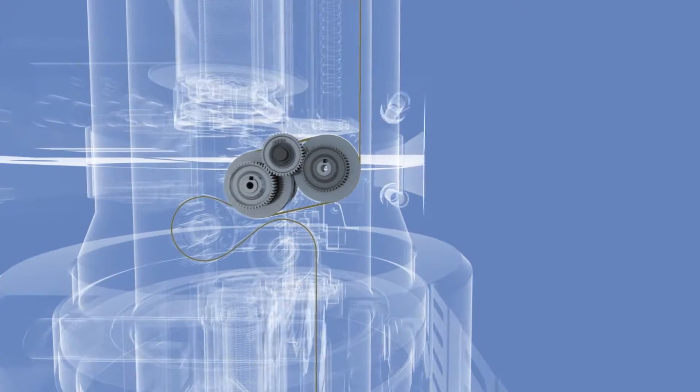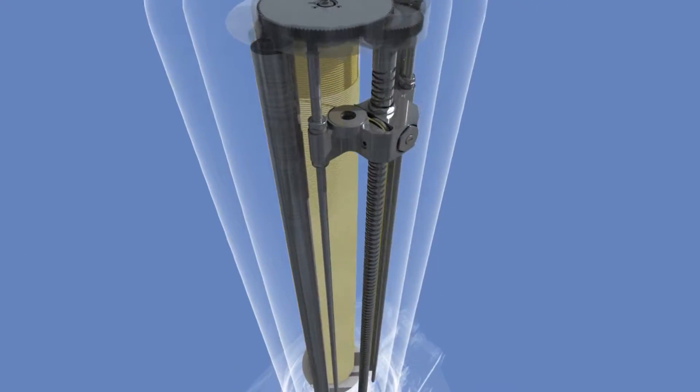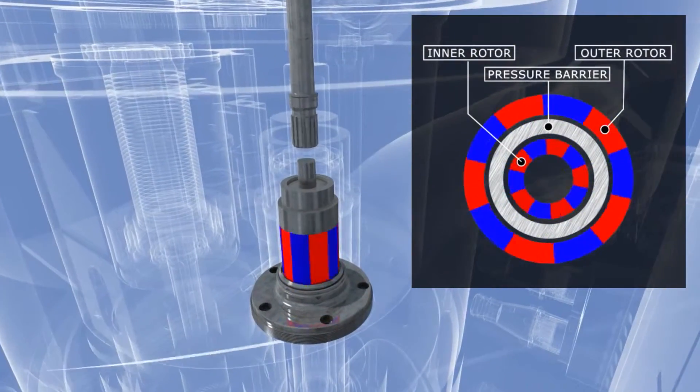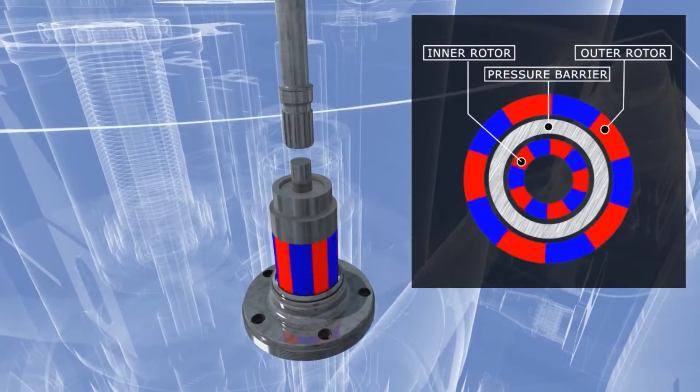The winch consists of a dual capstan drive and a storage drum with a magnetic coupler. This unique design transfers wear-free torque through the well barrier.